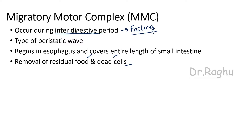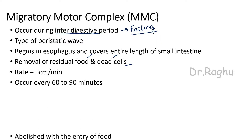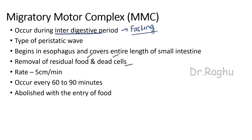MMC cleans the entire small intestine and prepares it for the next meal. The rate of MMC is 5 centimeters per minute, and it occurs every 60 to 90 minutes. Migratory motor complex is immediately abolished with the entry of food. Because it clears residual food and dead cells, this movement is called the housekeeper of the small intestine.